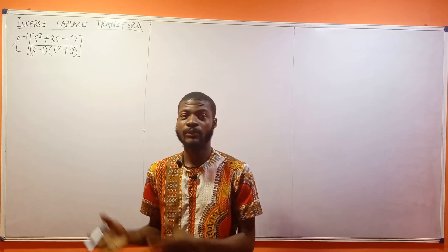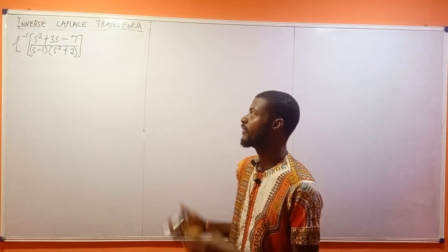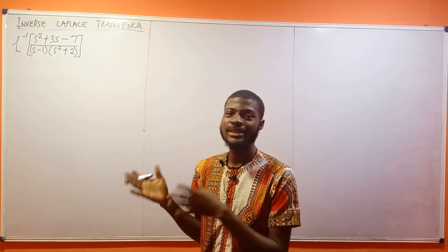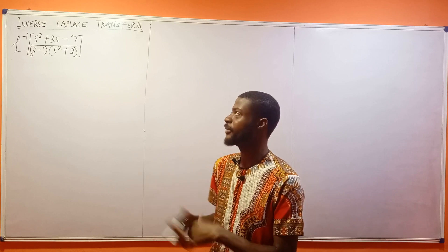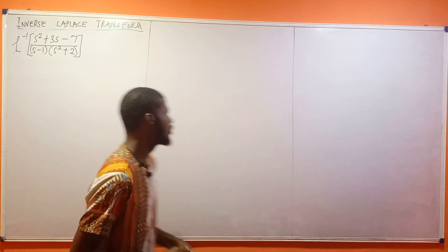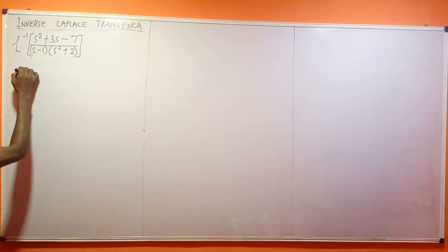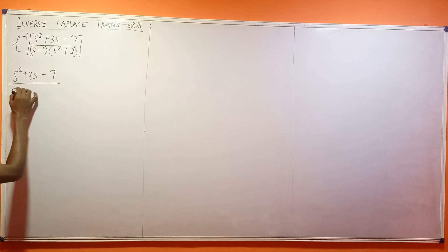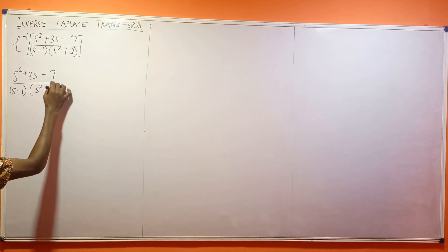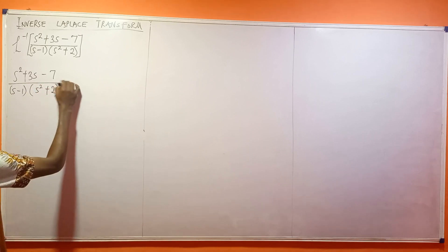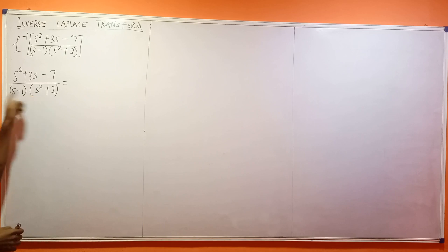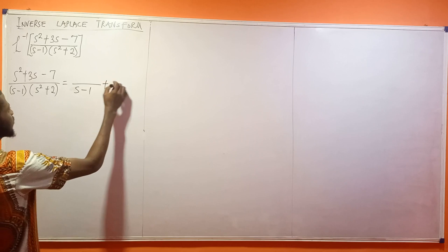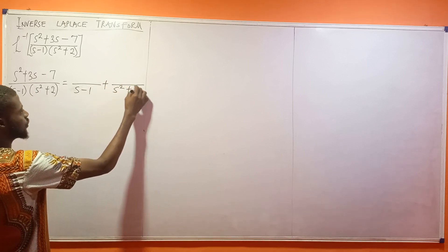In this video I'll be teaching you how to find the inverse Laplace of that expression. The first thing we always do is decompose this expression into simpler parts. We have (s² + 3s - 7) divided by (s - 1)(s² + 2). This is going to be equal to A over (s - 1) plus something over (s² + 2), since we have two factors.